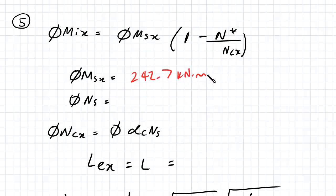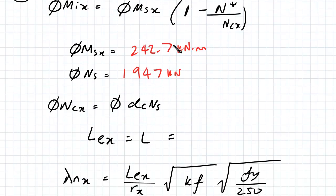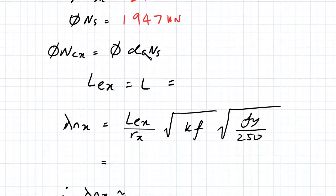And Phi NS equals 1947 kilonewtons. For these values, I went through them in the previous video and showed how you would calculate them. I would recommend you watch that if you're just watching the second video now. So Phi NCX equals Phi Alpha CNS.